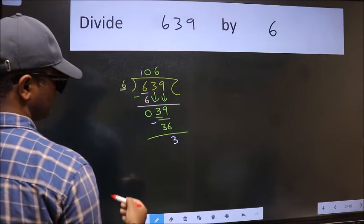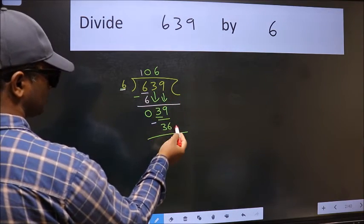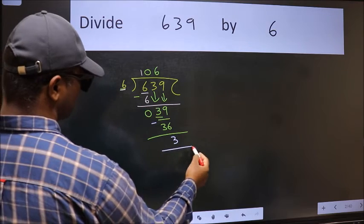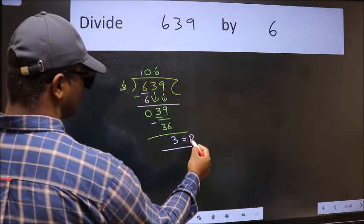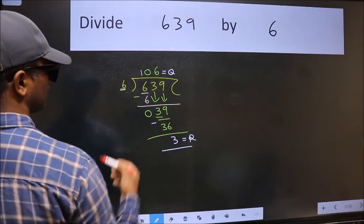We get three. No more numbers to bring down, so we stop here. This is our remainder, and this is our quotient.